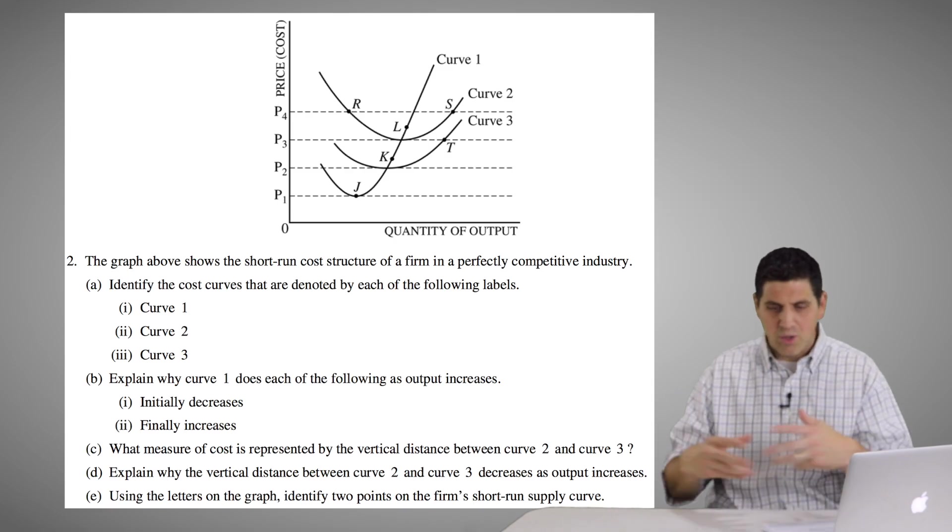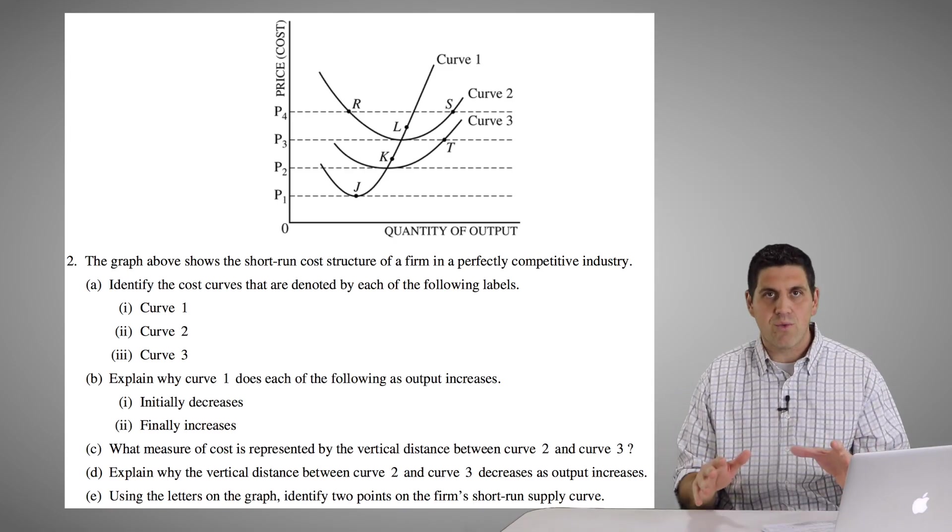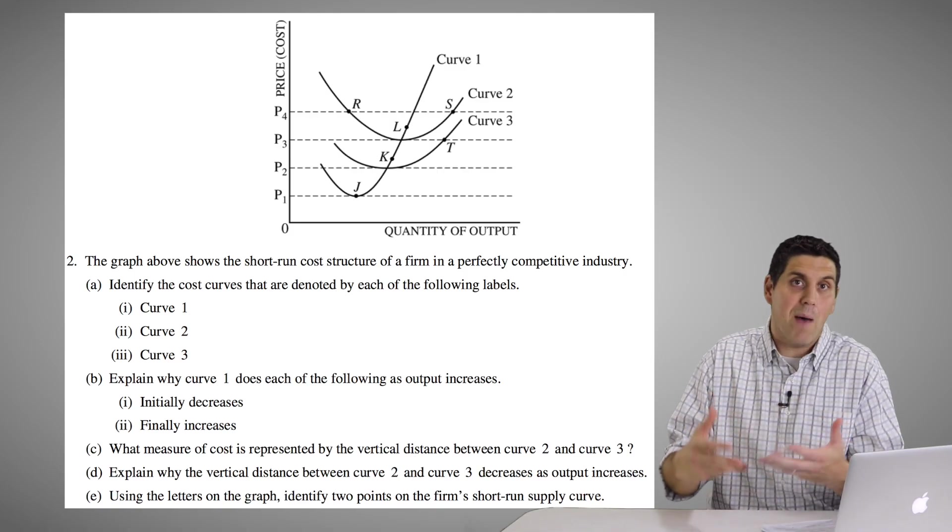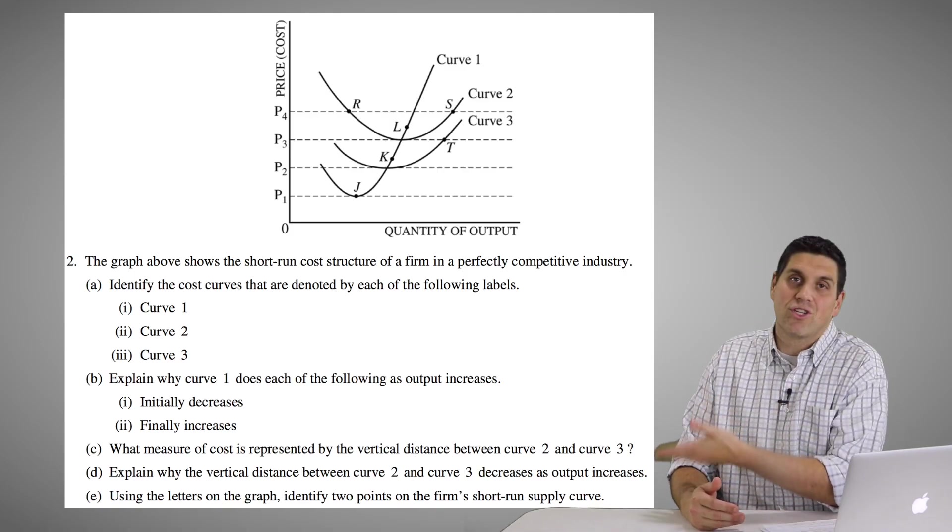Fixed resources, the workers have only so many things they can do. Specialization has run its course. So now each worker is producing less additional output. They're less productive. And so marginal cost goes back up.